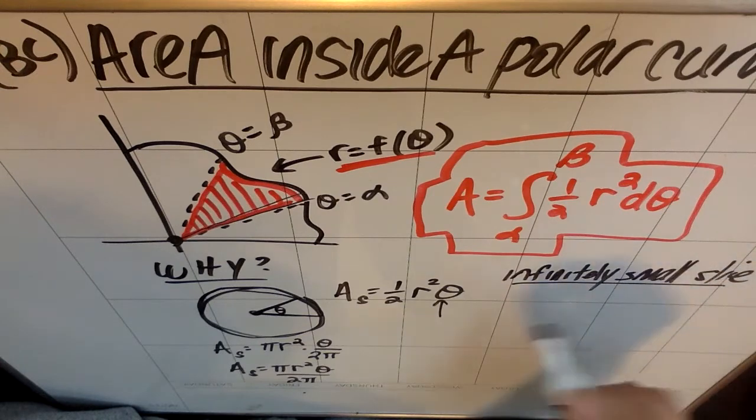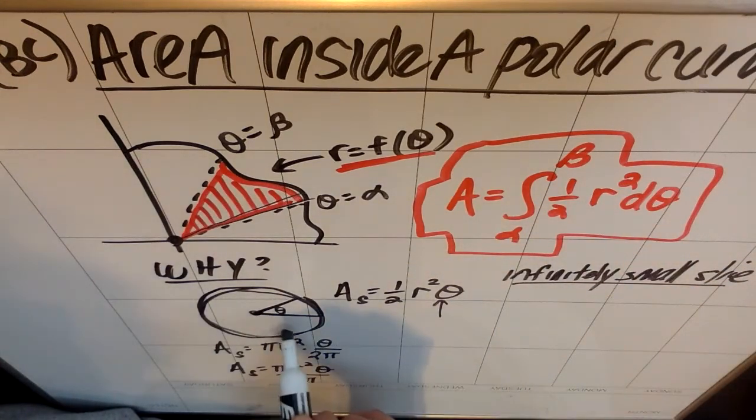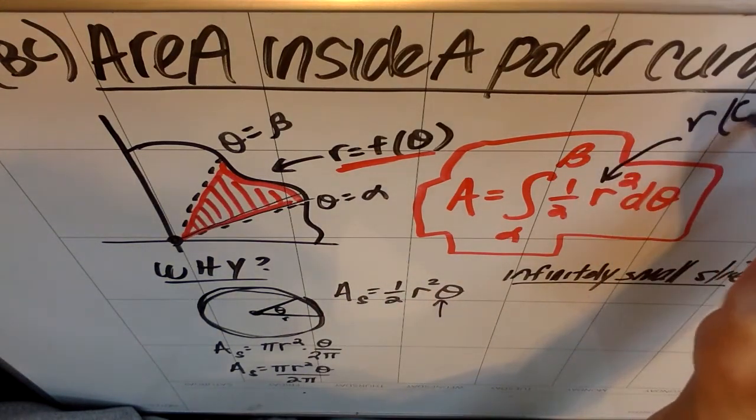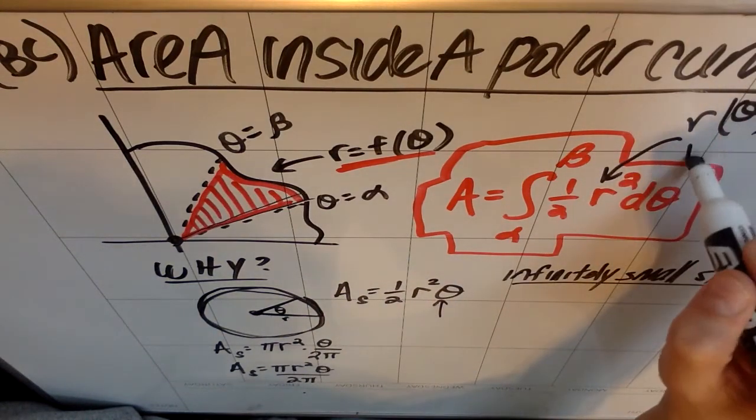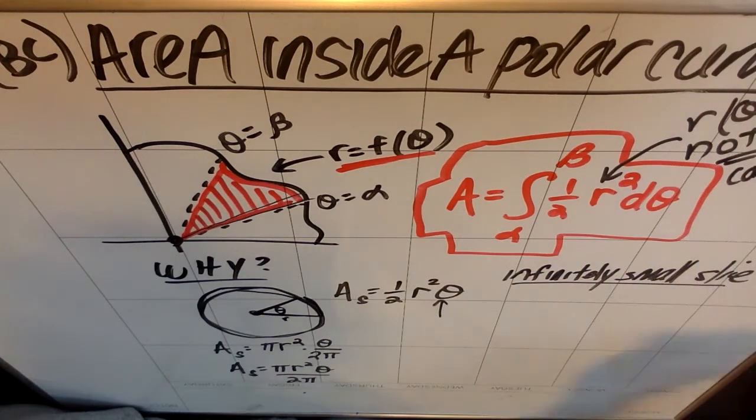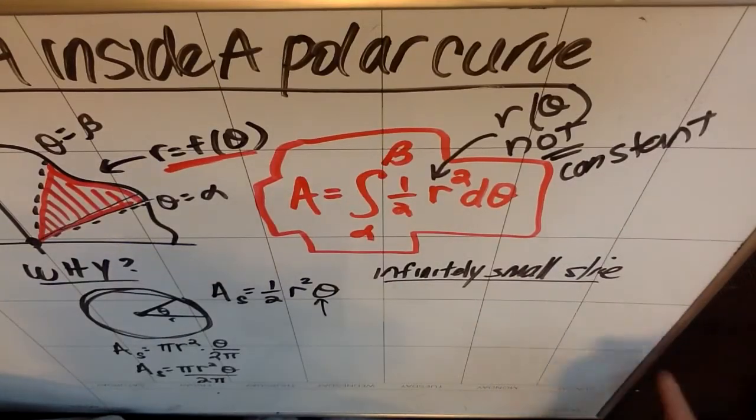Not only does it have a really, really small theta, but also the r isn't a constant. Like here r is a constant. This r in this formula is an r with respect to theta. It is not a constant. You can't see that I'm writing that it is not a constant, but I'll move the board over.